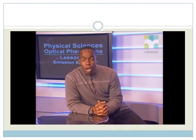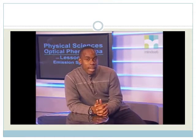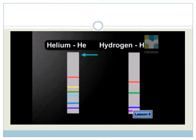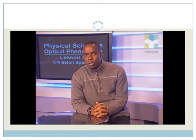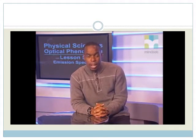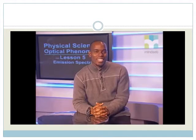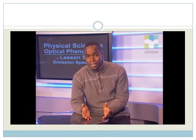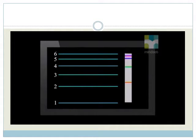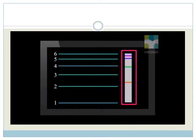Each gas has its own unique line emission spectrum — we can think of it as that gas's signature. For example, here are the line emission spectra of helium and hydrogen. But how do these line emission spectra form and why are they unique for each gas? To understand why only some colors are seen, we need to look inside the atom at what is happening on a microscopic level. Let's watch an animation for hydrogen. The electron can be excited and fall back different numbers of energy levels, and the color of light emitted depends on how many energy levels the electron falls.